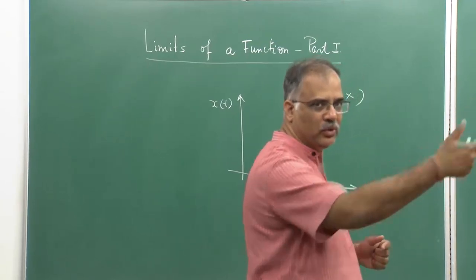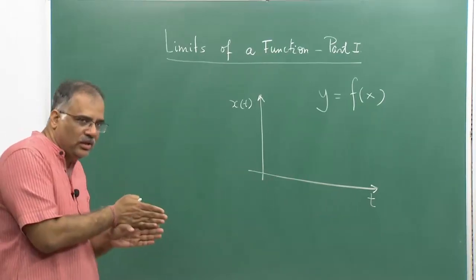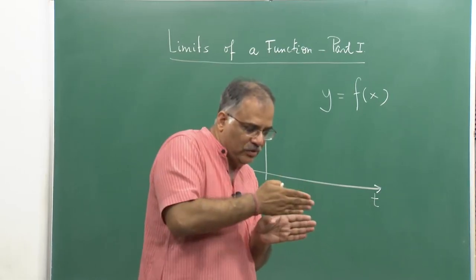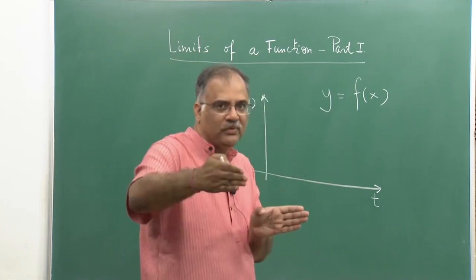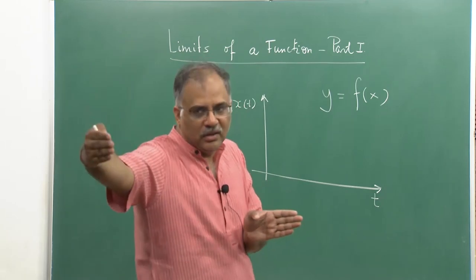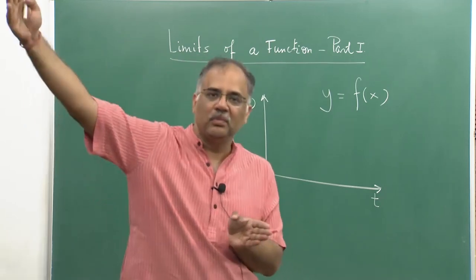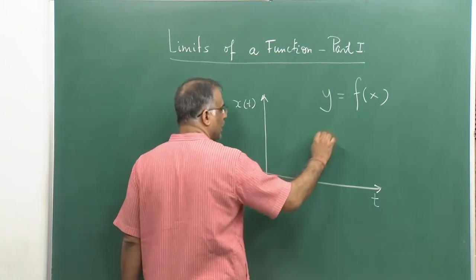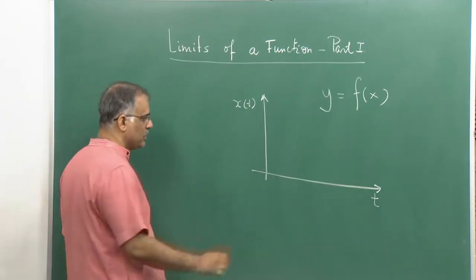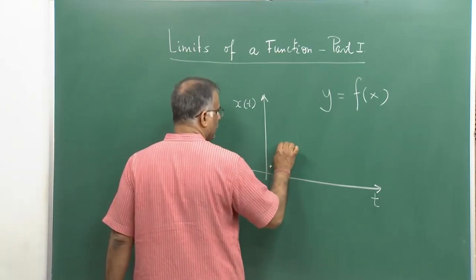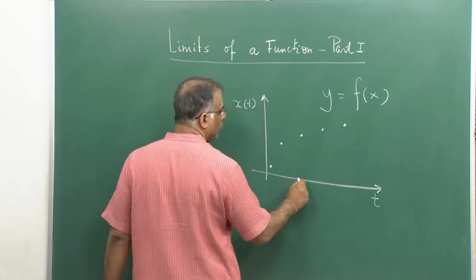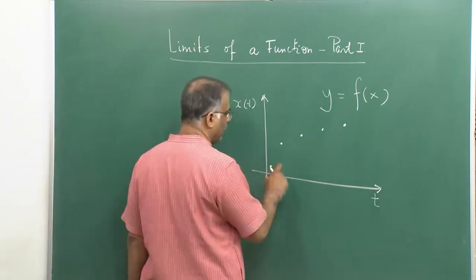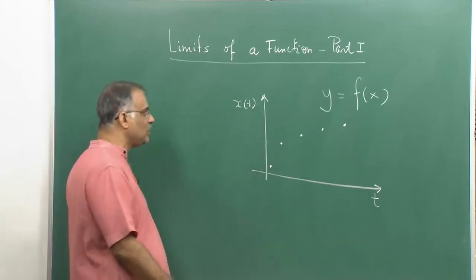As you move, the distance changes; as time flows you cover more distance. For example, a train starts at 3 o'clock from Howrah station heading towards Bandel station. At 3:15 it has reached the next station Liluah, at 3:30 it is at some other place, 3:40 at another place, and so forth. So distance is essentially a function of time. You can plot it at discrete times, say every 60-second interval, giving you an increasing function in continuous time.